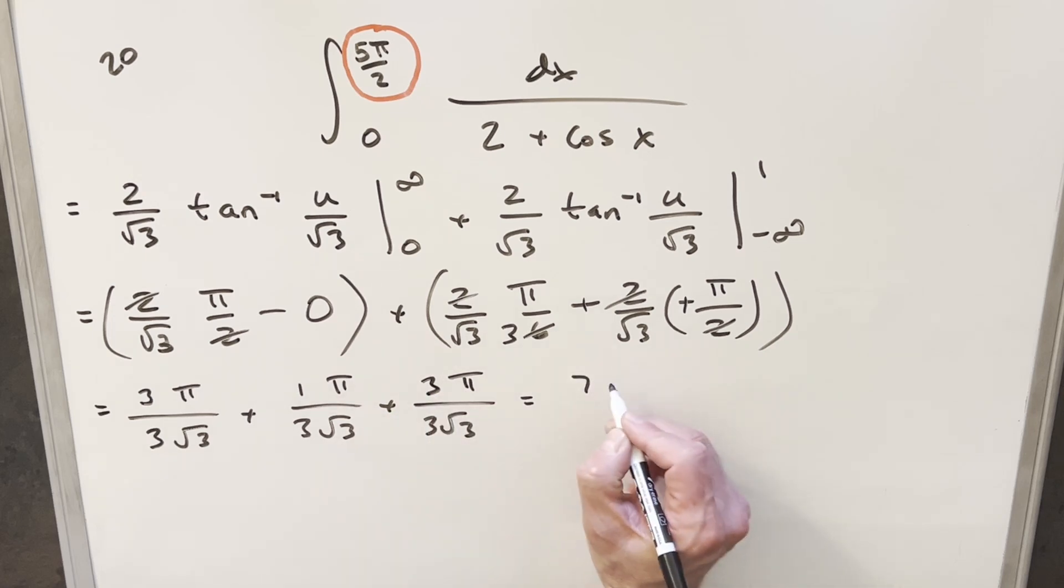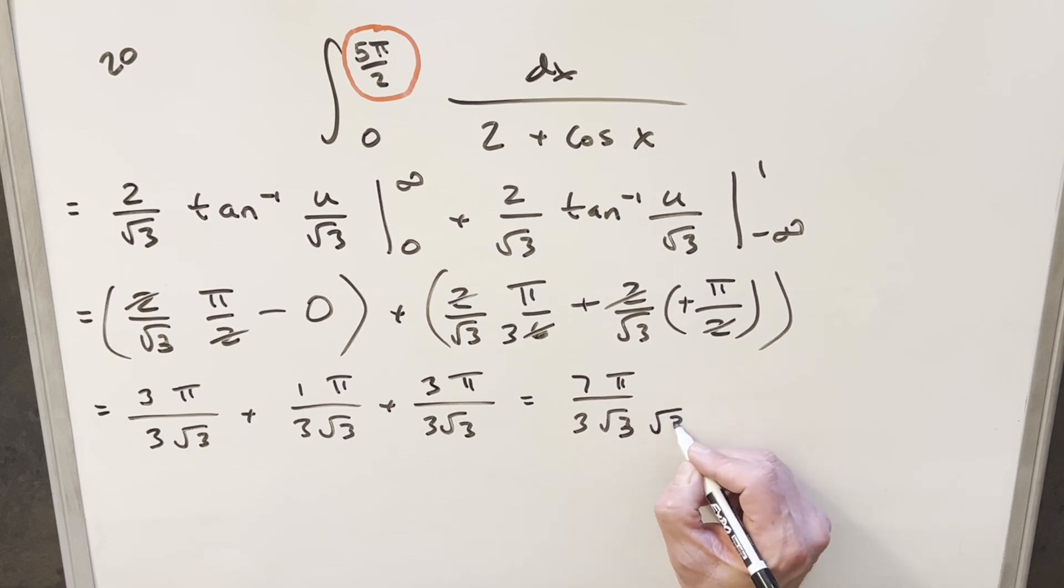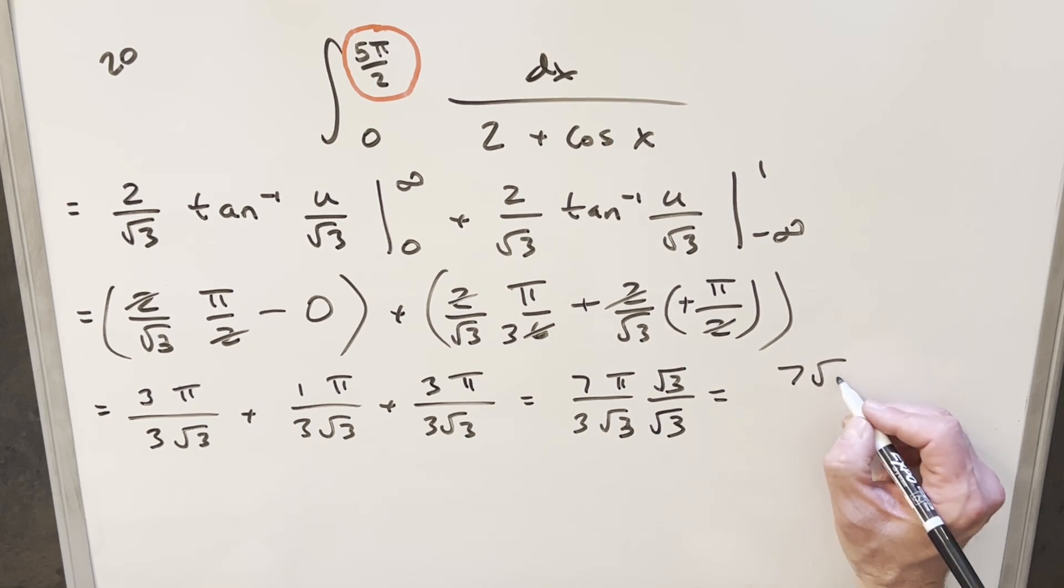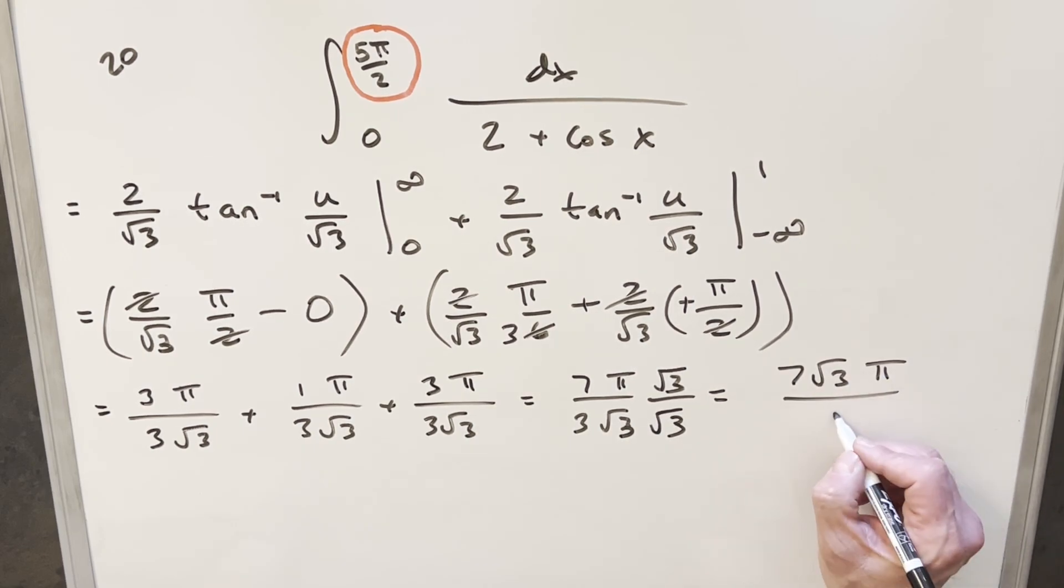3 plus 3 plus 1 gives me 7π over 3 square root of 3. This is actually fine, but we'll try to match MIT's solution, so I'll just rationalize this, multiplying by square root of 3 over square root of 3. And so for my final solution, we're going to get 7 square root of 3 π over 9.